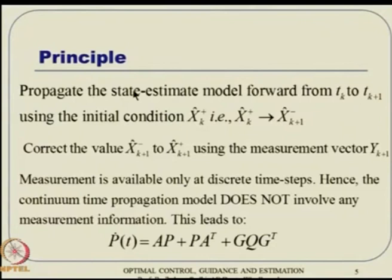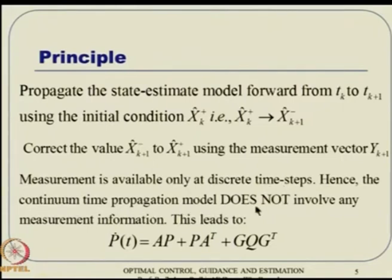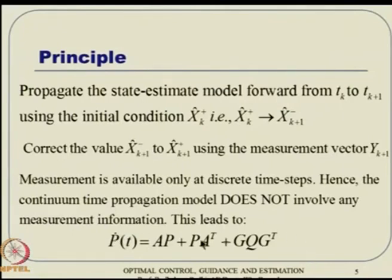The principle is: propagate the state estimate forward from T_K to T_{K+1} using the initial condition X̂_K plus, then correct the value from minus to plus at K+1 using the measurement vector Y_{K+1}. The measurement is available at discrete time steps only, so the continuous time propagation does not involve any measurement information. Thus P-dot takes a relatively simpler expression in this form.